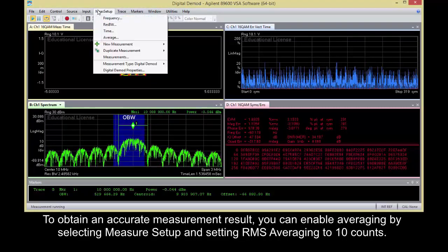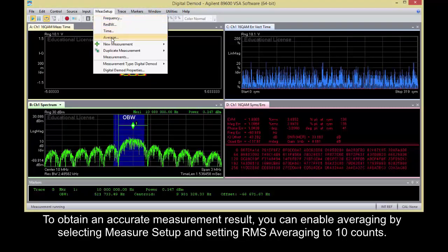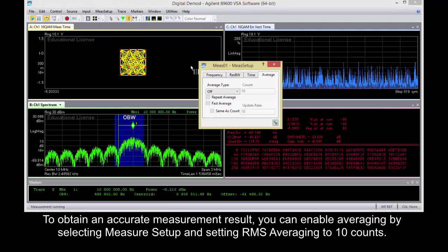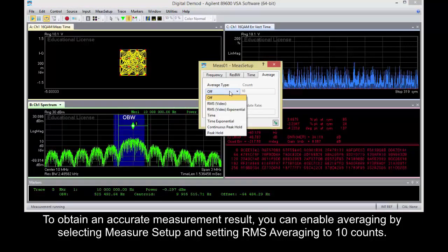To obtain an accurate measurement result, you can enable averaging by selecting Measure Setup and setting RMS averaging to 10 counts.